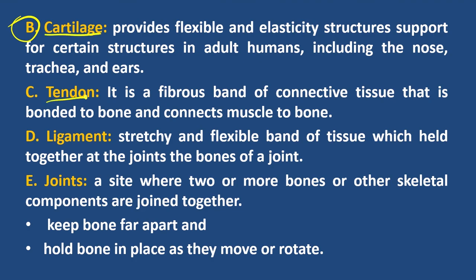The ligament connects the joint. Cartilage provides flexible and elastic structures. It gives support for certain structures in adults — the nose, the trachea, the ears — providing elastic stretch.